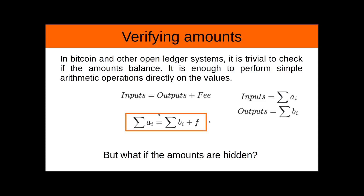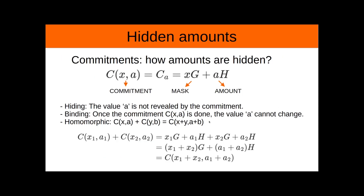But what if the amounts are hidden, and how is it done? Monero hides the amount with commitments. A commitment is a multiplication of a mask by the generator G, plus the amount by another generator H, and this is computationally binding. Once I give you the commitment C, the value A cannot change. This is homomorphic too, so the commitment of A plus the commitment of B is the commitment of A plus B. We can check this by seeing the associative property of the addition of elliptic curve points.